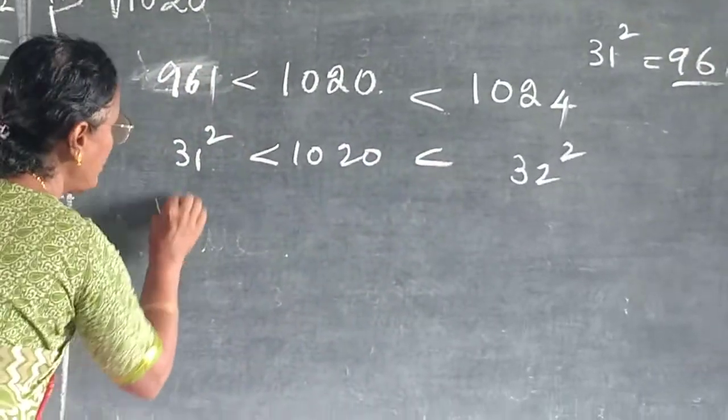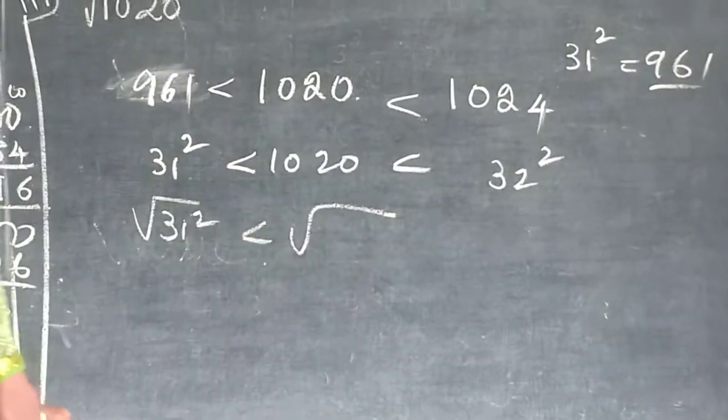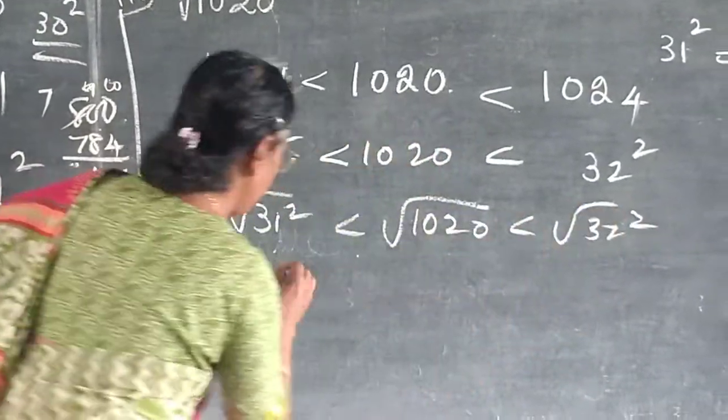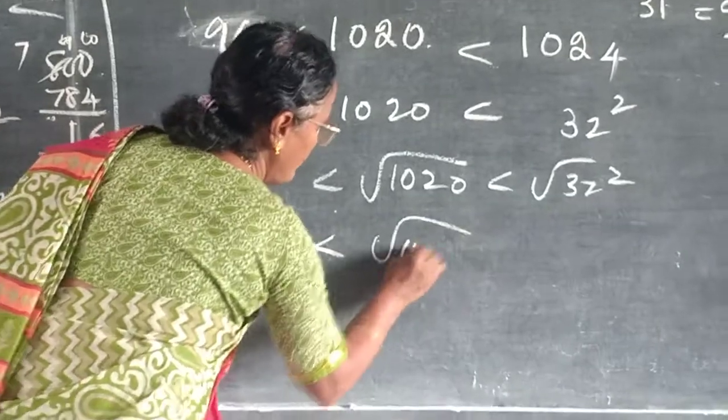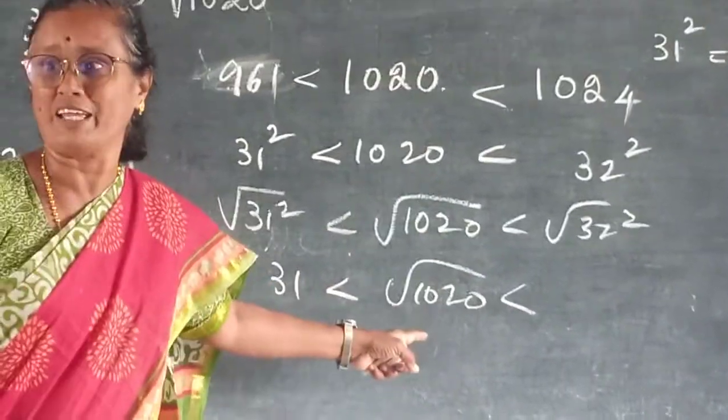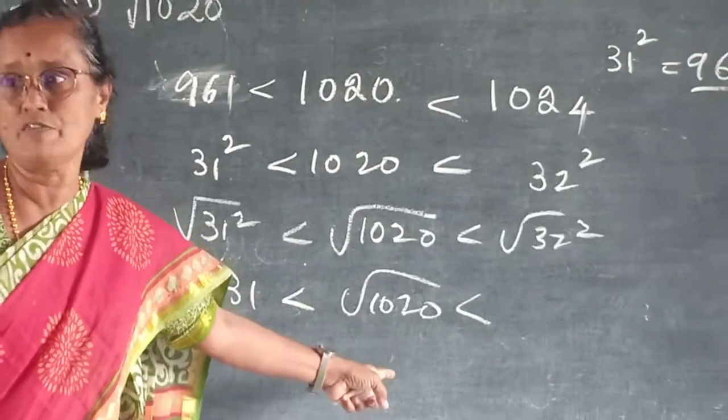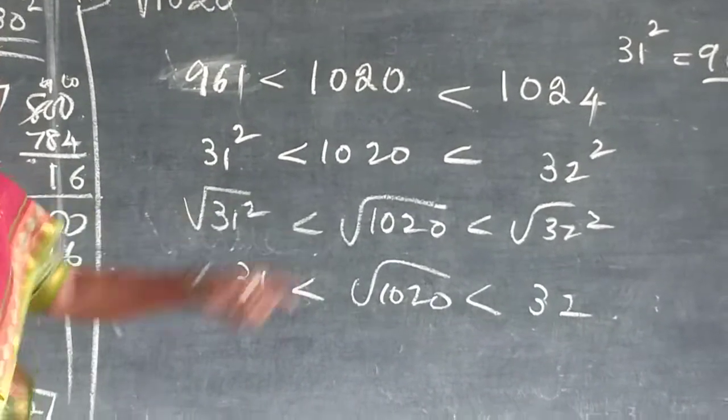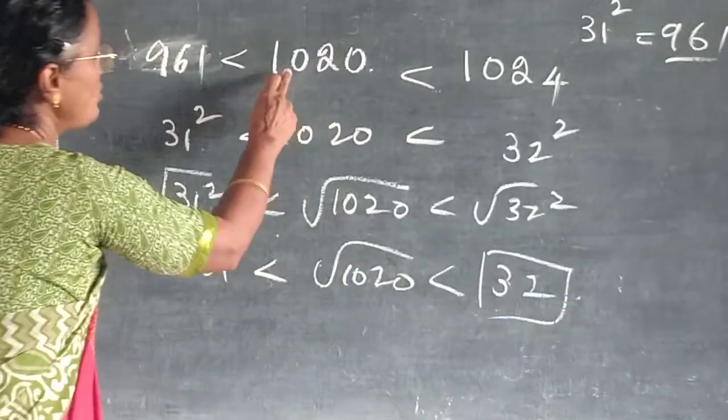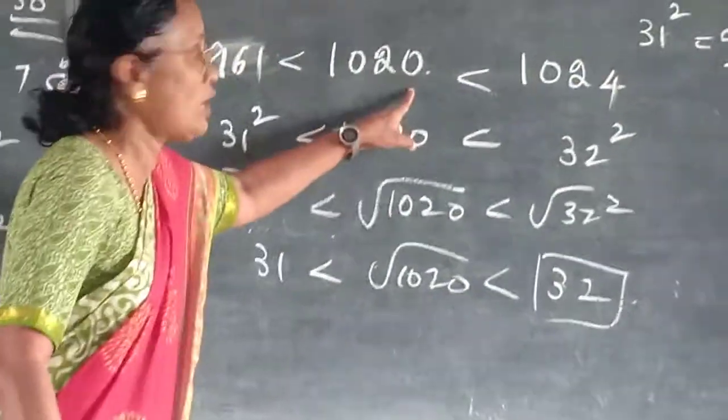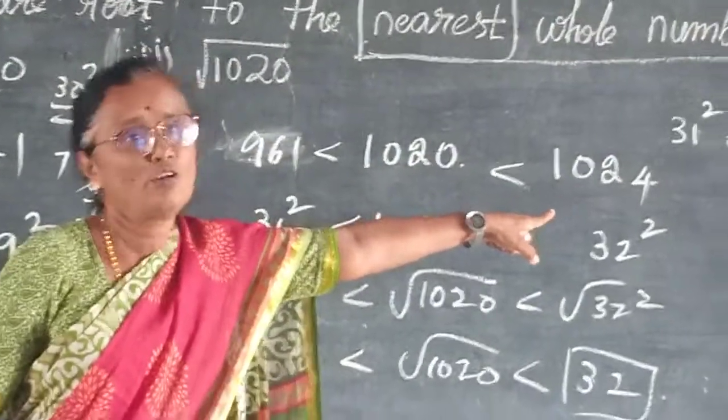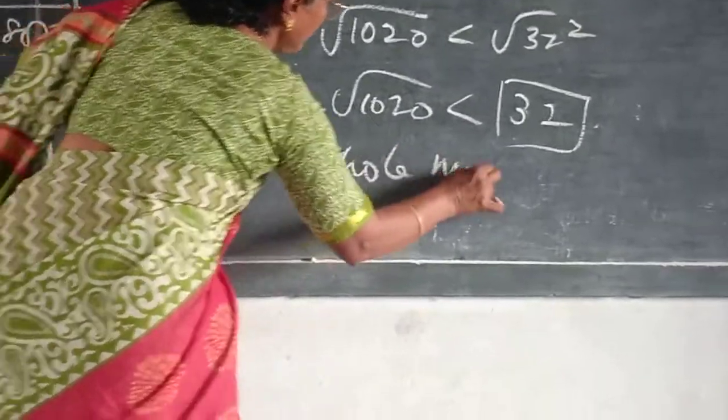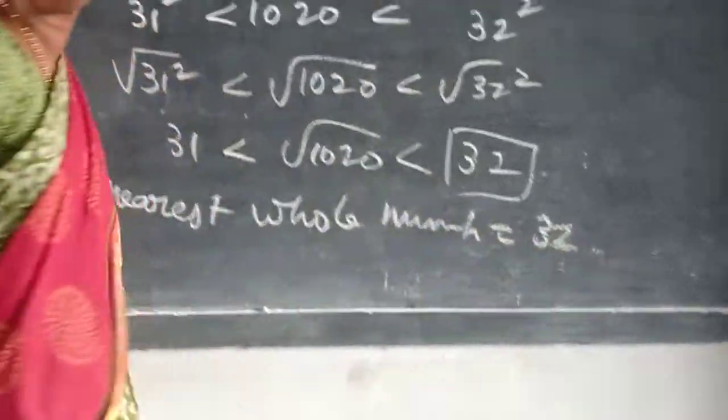Next one is what? They are asking root only. Estimate the value of the following square root. Root of 32 square. This is 31. Here, root of 32. Because this is not a perfect square. Which is the nearest value here? 31 or 32? 32. 1,020. This is 1,024. Only 4 you have to add. So, nearest whole number equal to 32.